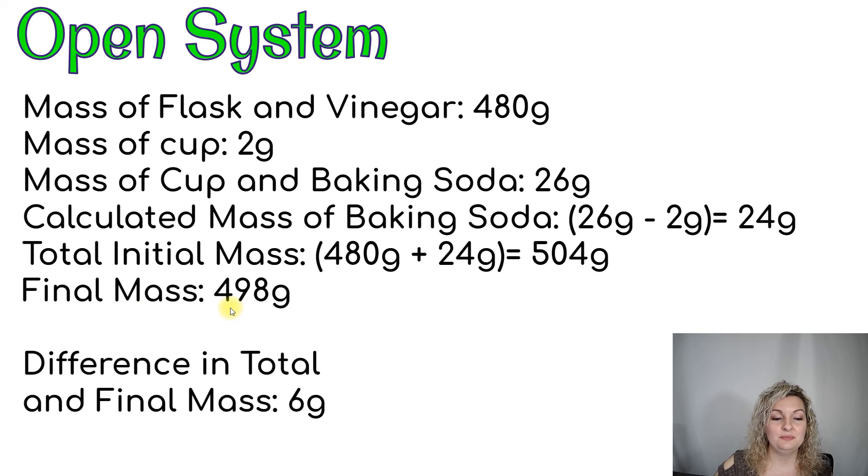Now the final mass is going to be 498 grams. That's after the chemical reaction took place. So if I subtract those two, 504 minus the 498, you're going to get a difference of 6 grams. That means 6 grams went out and left our open system and went into the surrounding air or surrounding system around it. And those are going to be in the form of mostly gases and small particles and molecules.